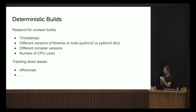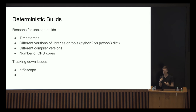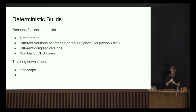A really useful tool for tracking down these issues is diffoscope, which was originally written by the Debian folks who also work on deterministic builds. You can install it on pretty much any Linux system — it's on the Python package manager and you can install additional dependencies with your own package manager. I find it really helpful.